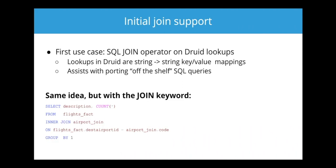Another potentially more interesting under-the-hood change is that the join operator is now a real join operator in Imply 3.3 and Druid 0.18. The lookup function in Druid was just modeled as a regular function — almost like a built-in UDF — and neither the SQL layer nor the native query layer treated it any differently from, say, SUBSTRING. But now the join operator is a real, honest-to-goodness join operator. That means you can do not just inner joins, but also left joins and cross joins.